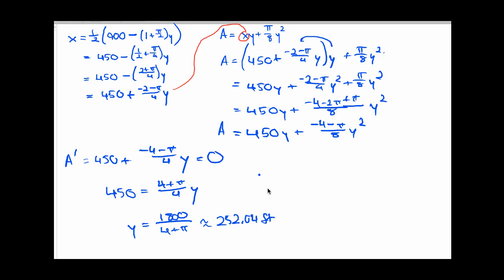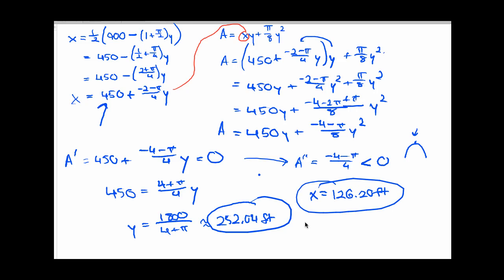Now, that's a critical number. Is it a local extreme value? Well, let's take the second derivative of this function and see. A double prime is just going to be equal to negative 4 minus pi over 4, and that's a negative number. So a double prime is always negative. That means this is the only critical number for a, and a is always concave down. So the function has to look like this, and there's my critical number. So that means that a does in fact have an absolute, not just a local, but an absolute maximum at this y value. So the only thing left to do is to calculate the x. And if I go back to my formula here for x, if you put that y value back in for x, you end up with 126.02 feet. It's exactly half of what y is, and that's the answer to our problem.